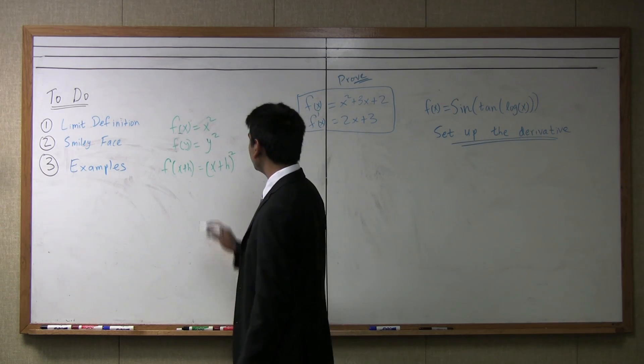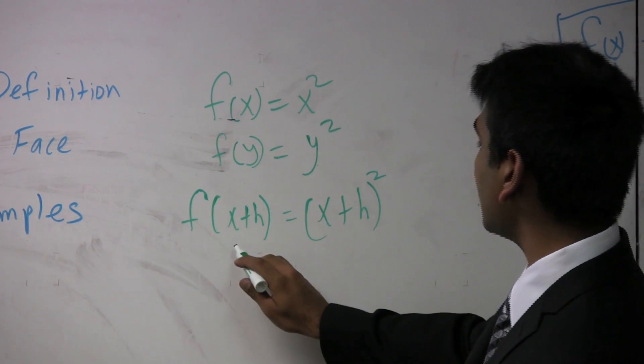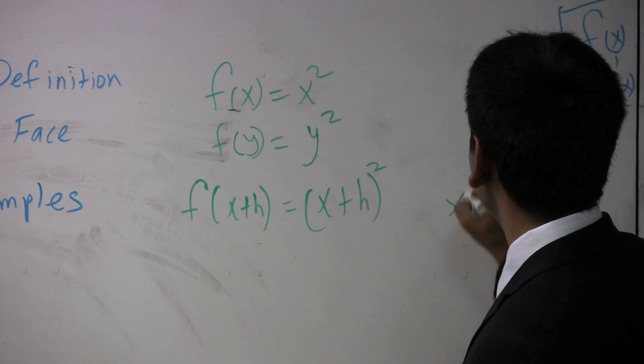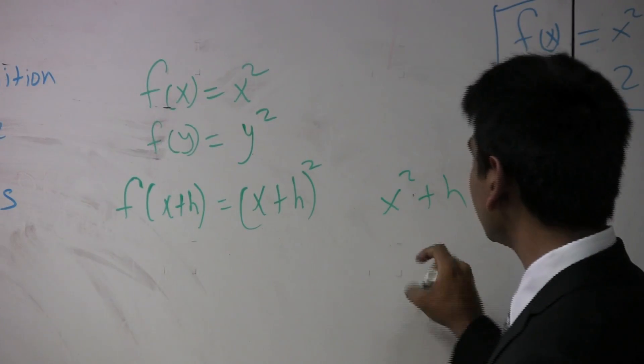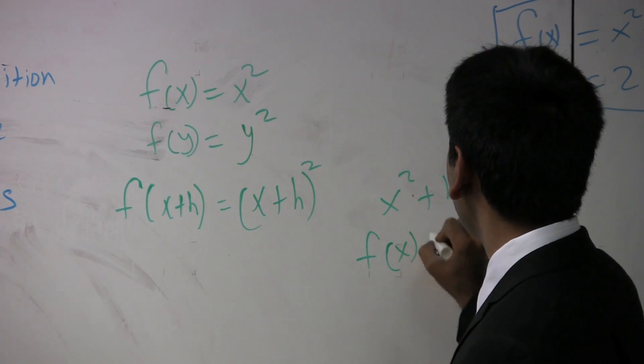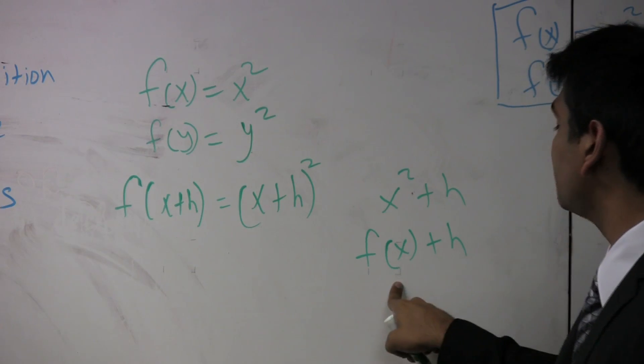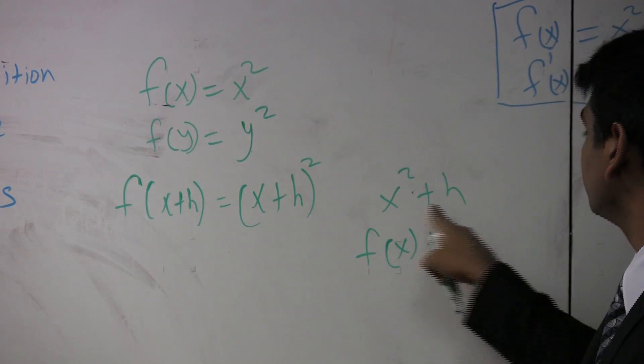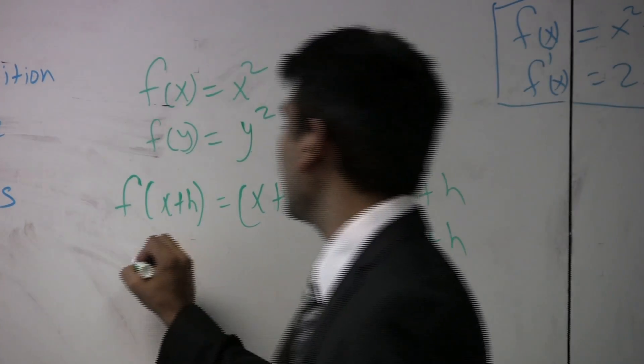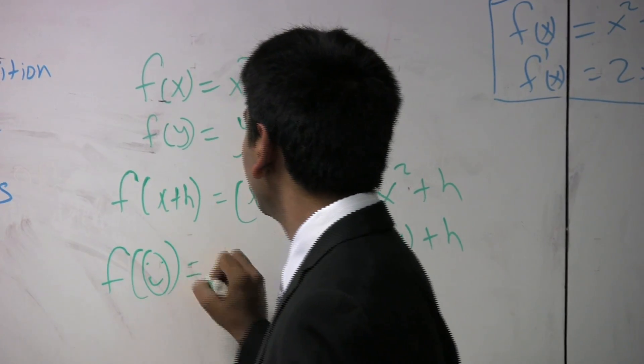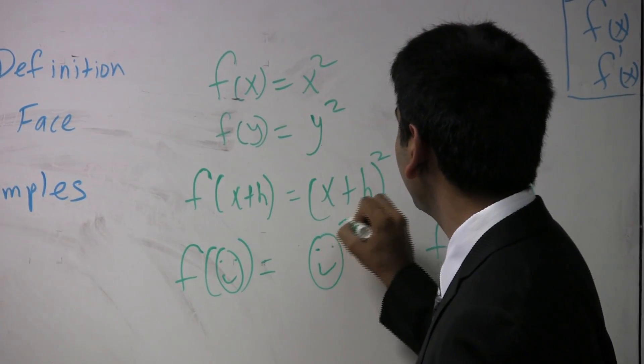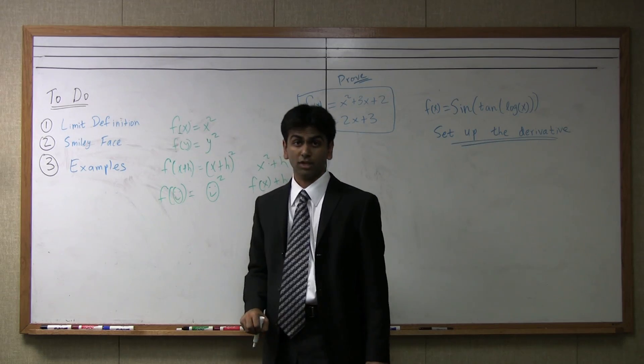So, as you can see, this is different. This f of x plus h is different from this. This is actually f of x plus h like that. Notice because f of x is x squared. So, f of smiley face in this context is simply smiley face squared.